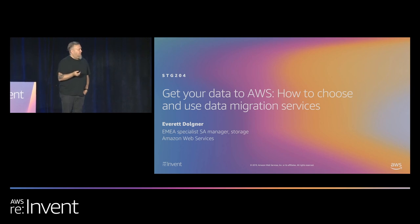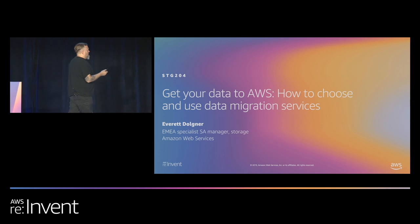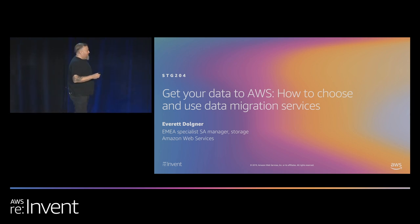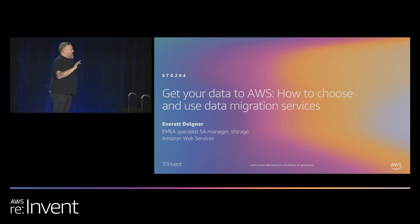I'm Everett Olgner. I run the Storage Specialist Solutions Architecture team in EMEA. As you can clearly tell from my accent, I live in Berlin, Germany. And today we're going to be talking about data migration into AWS.